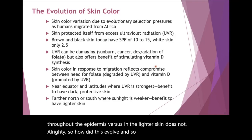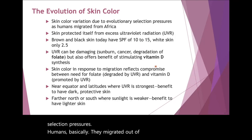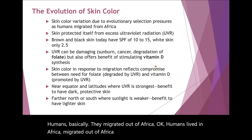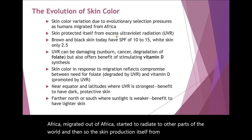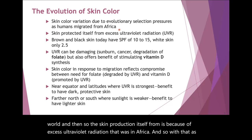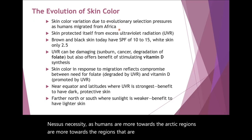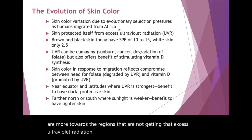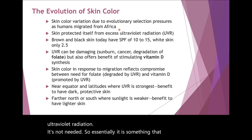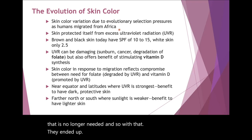So how did this evolve? Due to evolutionary selection pressures, humans migrated out of Africa. The darker skin production is because of excess ultraviolet radiation that was in Africa. As they radiated out, the production necessity — as humans moved more towards the Arctic regions not getting that excess UV radiation — it's not needed. So essentially it is something that was produced that is no longer needed, and throughout lineage, this did not happen overnight.